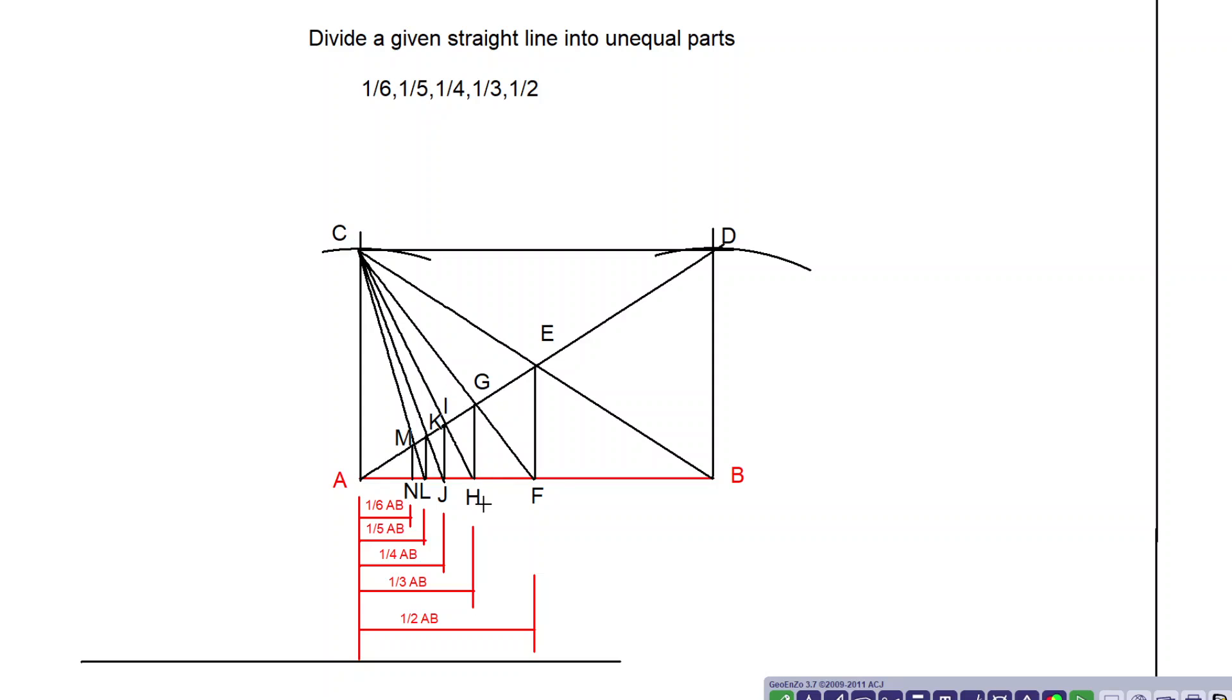Then I have connected CH. It is cutting the diagonal at I. I have drawn a perpendicular IJ. Then I have connected CJ. It is cutting the line at K.